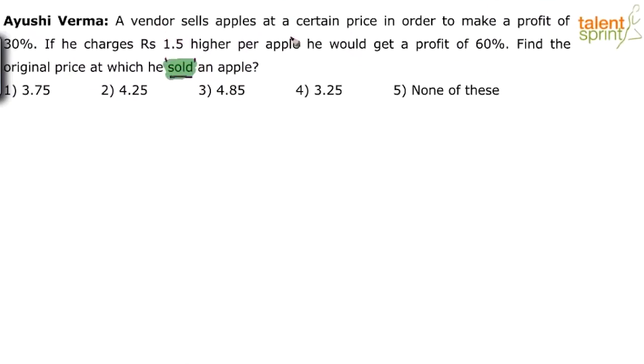The vendor has sold apples at a certain price to make a profit of 30%. So let us assume at whatever price he sells, S, the profit is 30%. Can you say S is equal to 130% of C? Because if the profit is 30%, selling price is 130% of the cost price.